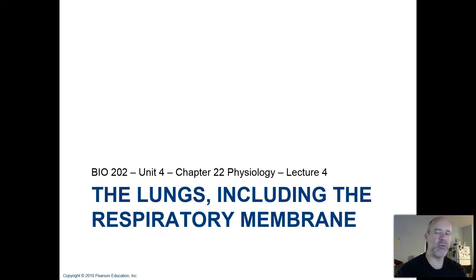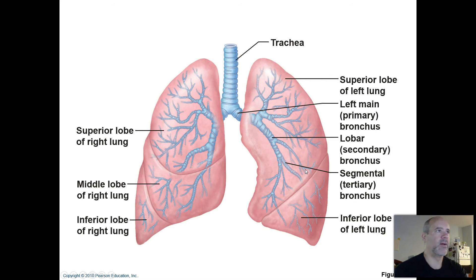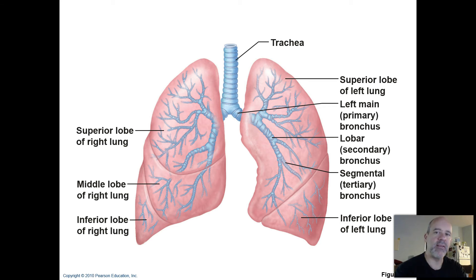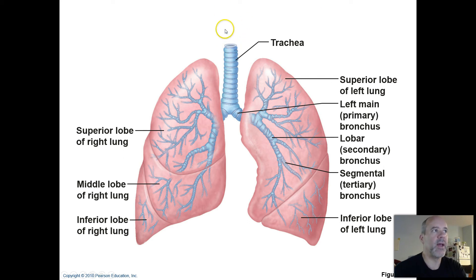Lecture number four for chapter 22. We're finally going to make our way down into the lungs. Thinking about our air story here: you breathe in, take in air through your nasal cavity or your oral cavity, then it makes its way through the different parts of the pharynx, enters the larynx, which is superior to the trachea, and now that air is passing down into the trachea.